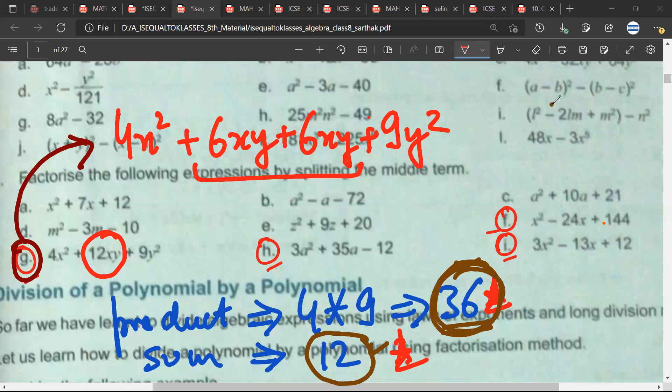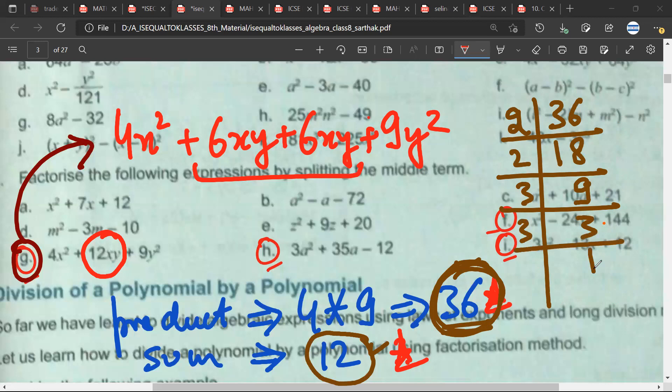The second trick is that you always take the product 36 and you do a prime factorization of this. So 2, 18, 2, 9, 3, 3, and 3, 1. Mr. Sartak, have you understood what I've done? Yes sir. Now I've done prime factorization.